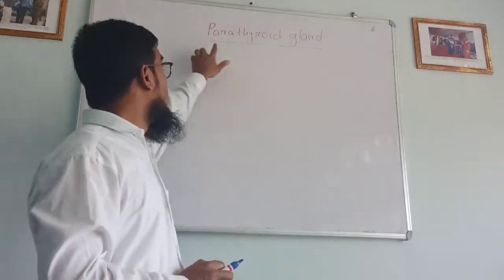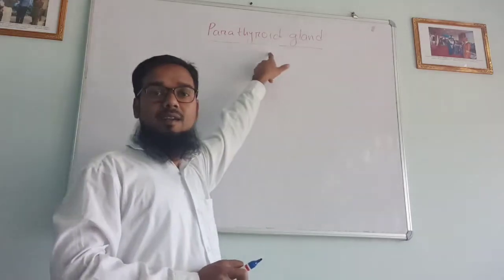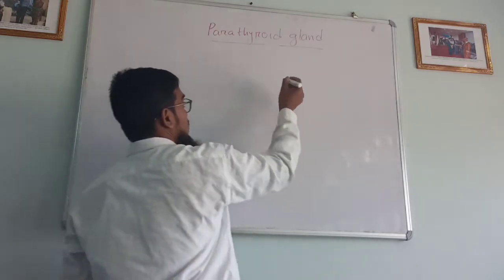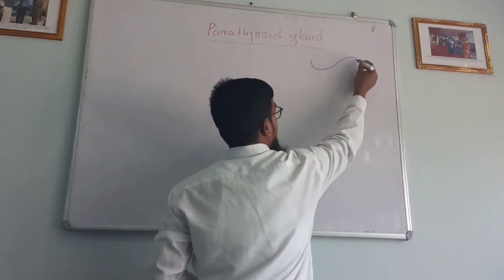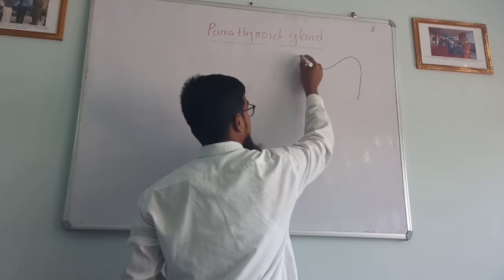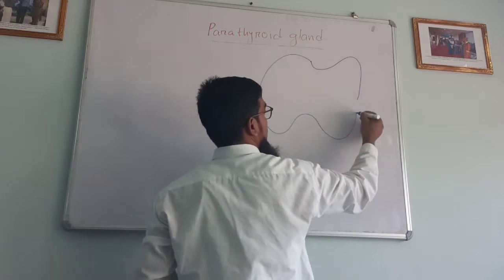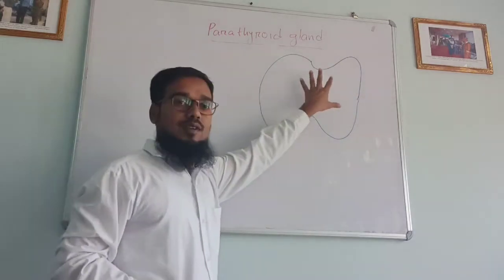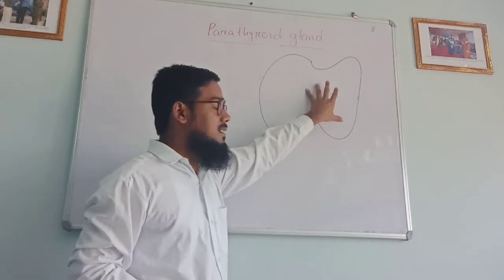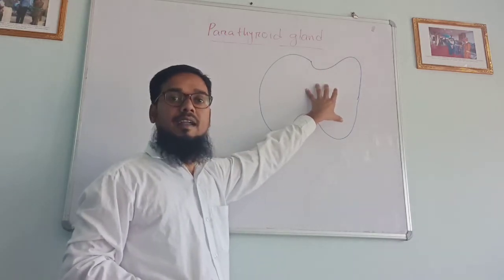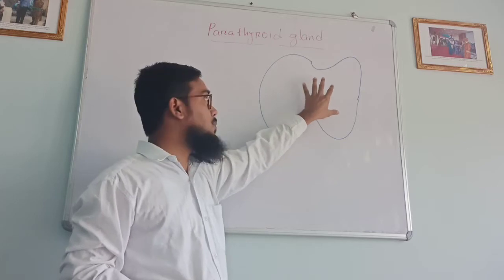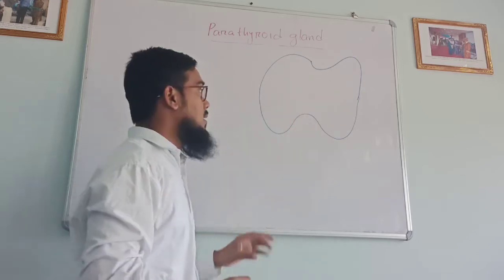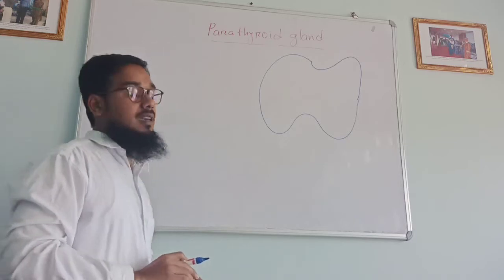Today we will discuss parathyroid gland. We will draw the diagram of parathyroid gland. This is actually not the parathyroid gland, it is the structure of thyroid gland. We already know that thyroid gland is a butterfly-like structure which is present in our neck. So what about parathyroid glands?